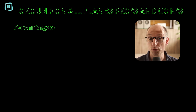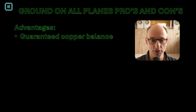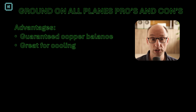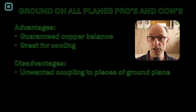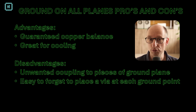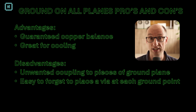Let's have a look at the pros and cons of putting ground on all layers. The first advantage is guaranteed copper balance — I'll explain that in a minute. The second advantage is cooling. There's so much copper on the board that the board is an excellent heat conductor. Anyone who's ever had to solder a four-layer board with copper on all planes and tried to remove an SMD component will know you really have to put a lot of energy in. Disadvantages: unwanted coupling to pieces of ground plane. If those pieces are not connected to the main ground plane well enough, you can get resonances on them.